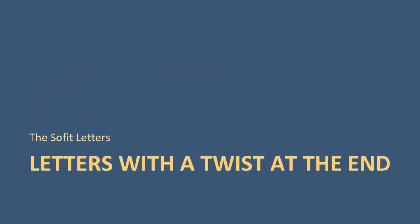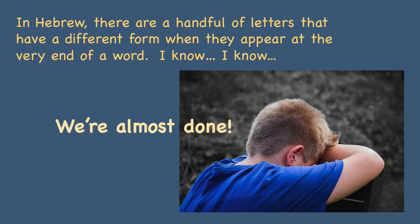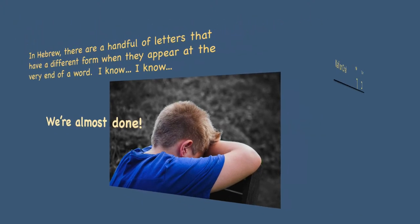Before we practice those letters, I want to introduce you to a final element about the Hebrew alphabet, particularly dealing with the letters. There are a number of letters — five to be exact — that take on a different form when they appear at the very end of a word. Just when you think you've got all the letters, there is an additional element. The good news is it concerns only five letters, and in my experience the context makes it pretty easy for people to learn and retain this information.